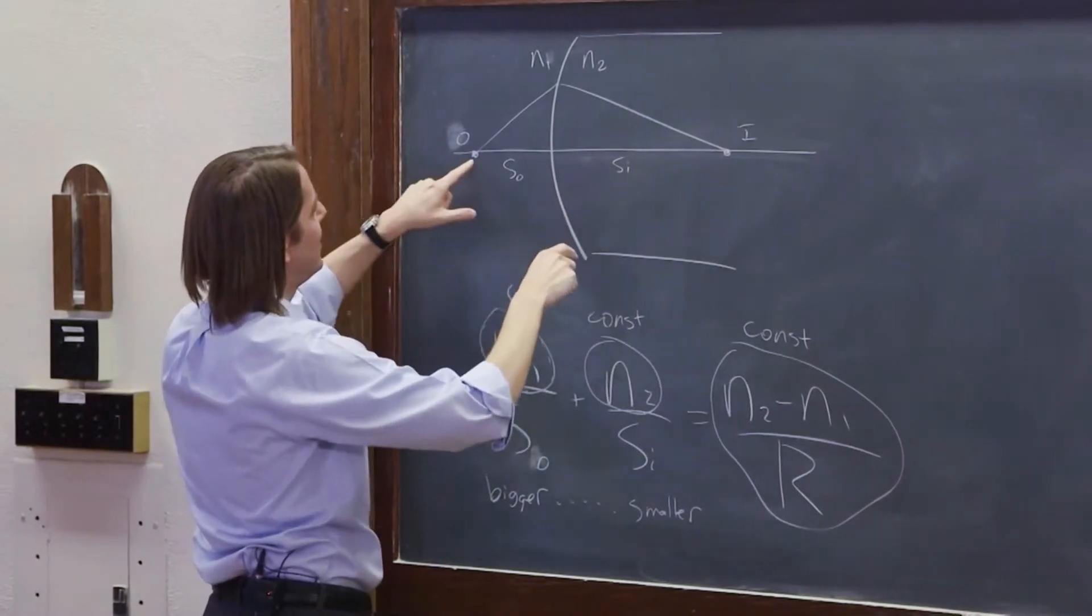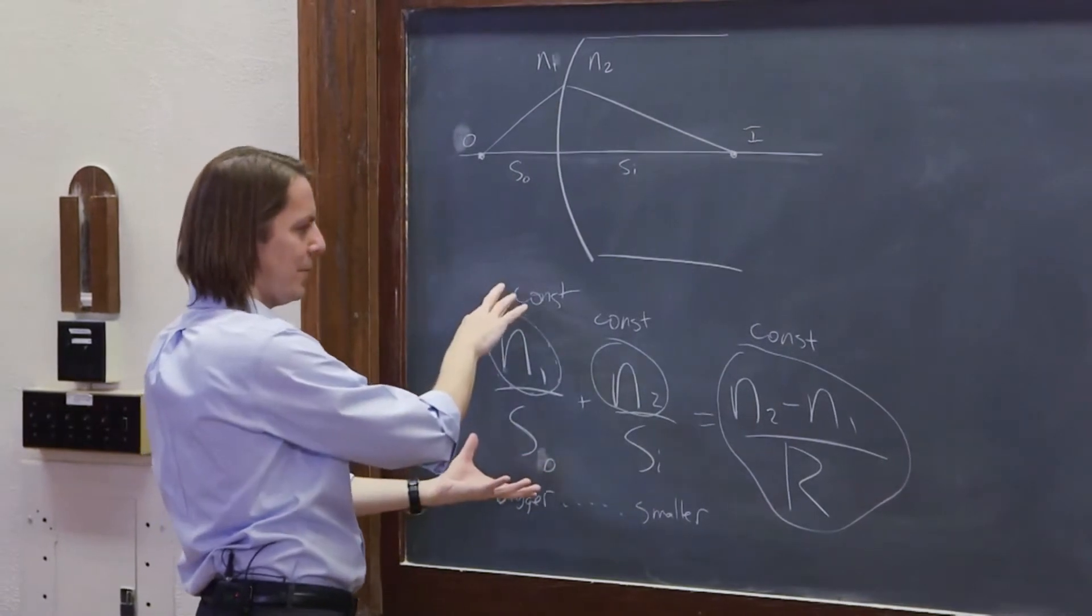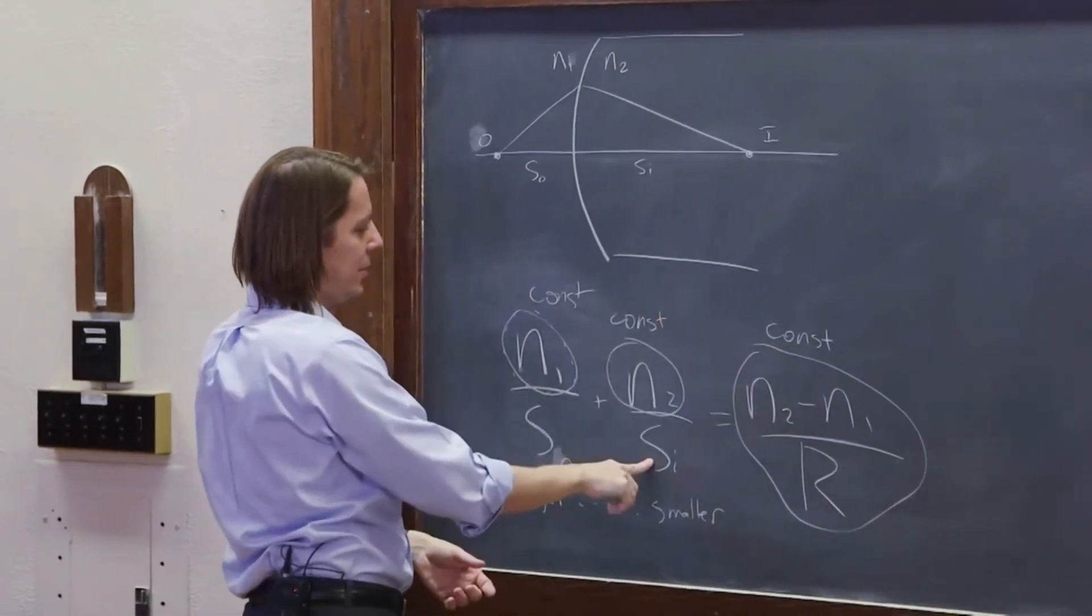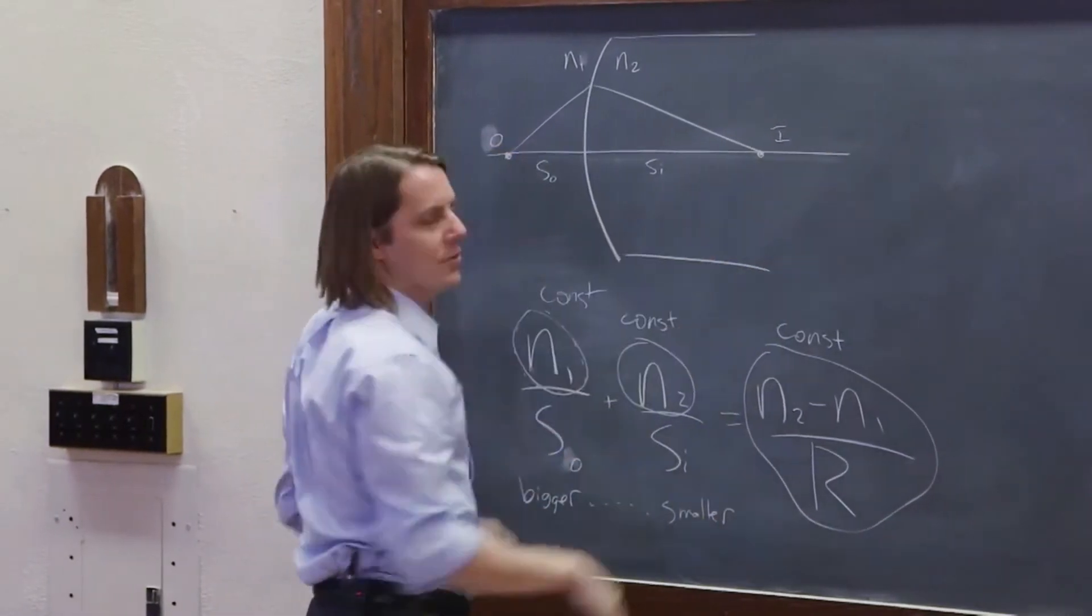And likewise, if I make the object distance smaller, if I push this forward, this gets smaller, this term gets bigger, this term's constant. So this term has to get smaller. How does it do it? By making the image distance bigger. So if I push this closer, the image distance goes farther back.